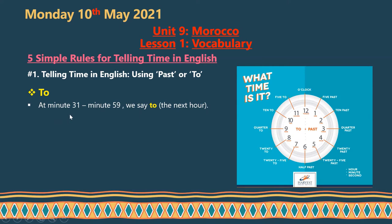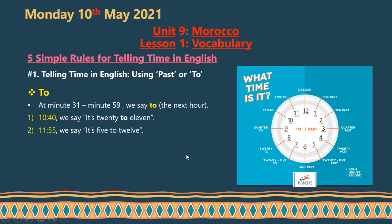We use 'to' for minutes 31 to 59, to refer to the next hour. For example, 10:40 — we say 'twenty to eleven.' This is because 60 minus 40 equals 20, meaning there are 20 minutes more until 11 o'clock. Another example: 11:55 — we say 'five to twelve,' meaning there are 5 minutes more until 12 o'clock.